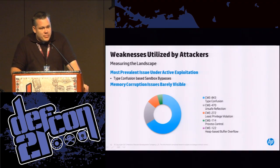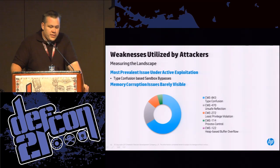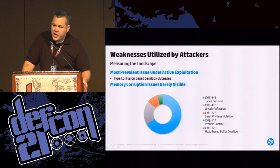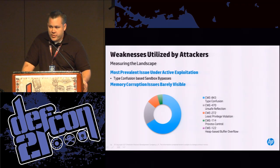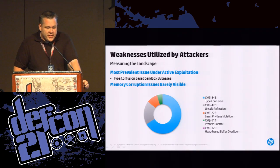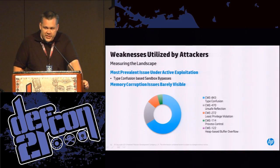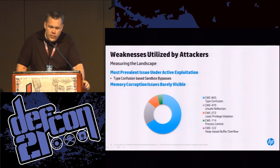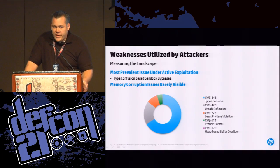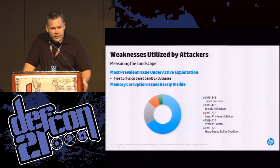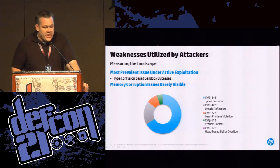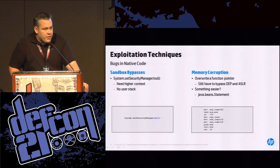Looking at what's actually being utilized compared to what's in the framework itself — type confusion is actually the most common bug utilized in the landscape with over two-thirds of the sample set being a type confusion bug. Unsafe reflection takes about a quarter, followed by least privilege violation. The three sandbox issues account for almost 90% of actual activity on the web. Memory corruption issues do get exploited but it's very rare — sandbox issues are worth more because you don't have to bypass OS mitigations like DEP and ASLR.